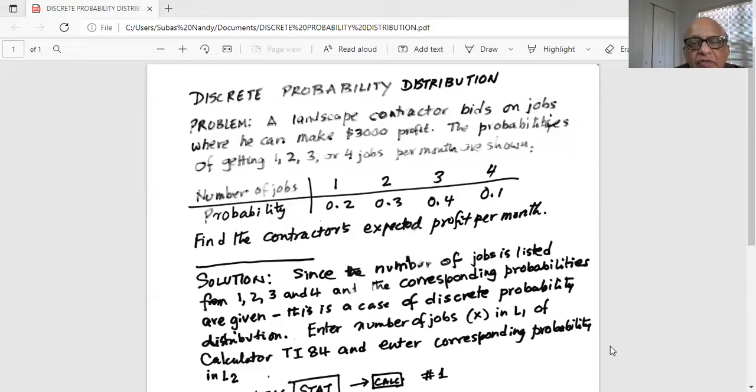Notice the number of jobs jumps from one to two, two to three, and then three to four. There's no decimal values possible and we can list and count the number of jobs. Hence, the random variable x, which is number of jobs, is a discrete random variable because we are jumping from one to two, two to three. No value in between one and two or two and three and three and four.